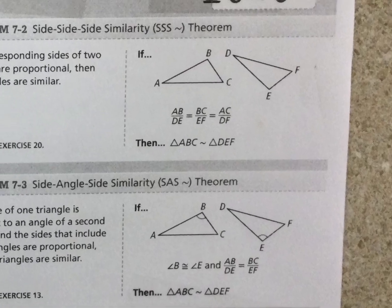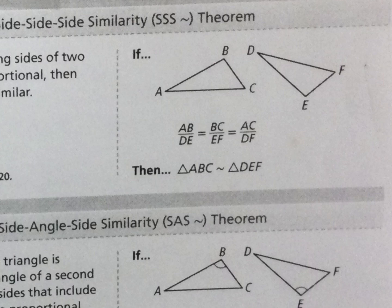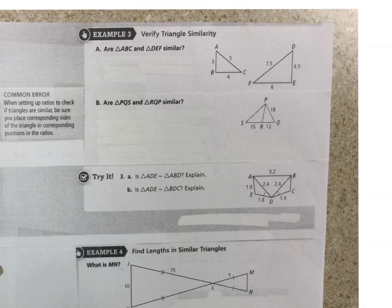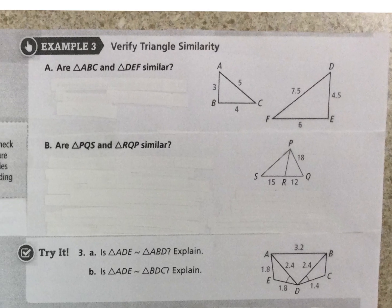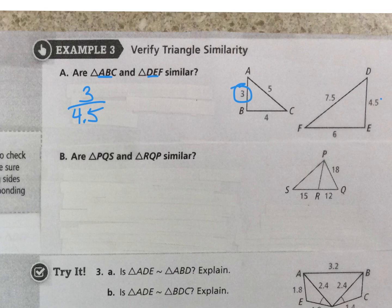And this is the way we check, side-side-side. We say AB over DE, BC over EF, and AC over DF. We check the proportions. So let's look at an example. Are these similar? So we have to make sure we're doing the same sides, though. AB and DE. So AB is 3, DE is 4.5. And if you look here, this is the smallest side, has to relate to the smallest side.